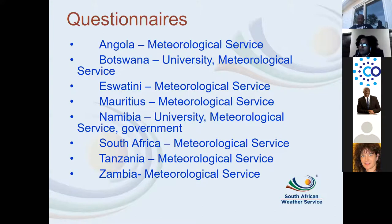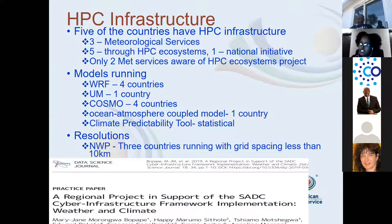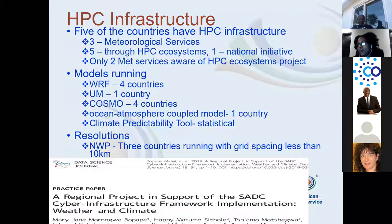In terms of high performance computing systems, three meteorological services indicated they have high performance computers. One of them is the South African Weather Service. The other two indicated they had HPC systems, but both of those systems are currently broken. So at the moment, the meteorological service with a functioning HPC system among those eight countries is the South African Weather Service. In total, five of the eight countries that responded have HPC systems — those are available because of the HPC ecosystems project that HAPI and TIAMO have spoken about, plus South Africa's national initiative.